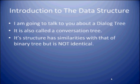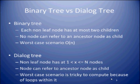In a binary tree, each non-leaf node has at most two children, and no node can refer to an ancestor node as a child. The worst-case scenario is Big O of N. In a dialogue tree, a non-leaf node has between 1 and N nodes, a node can refer to an ancestor node as a child, and the worst-case scenario is tricky to compute because of the loops within it.